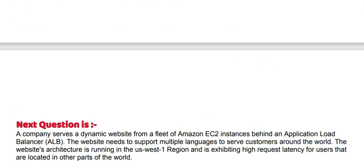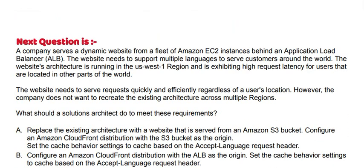Next question: A company serves a dynamic website from a fleet of Amazon EC2 instances behind an application load balancer. The website needs to support multiple languages to serve customers around the world. The website's architecture is running in the US-West-1 region and is exhibiting high request latency for users located in other parts of the world. The website needs to serve requests quickly and efficiently regardless of a user's location. However, the company does not want to recreate the existing architecture across multiple regions. What should a solutions architect do to meet these requirements?